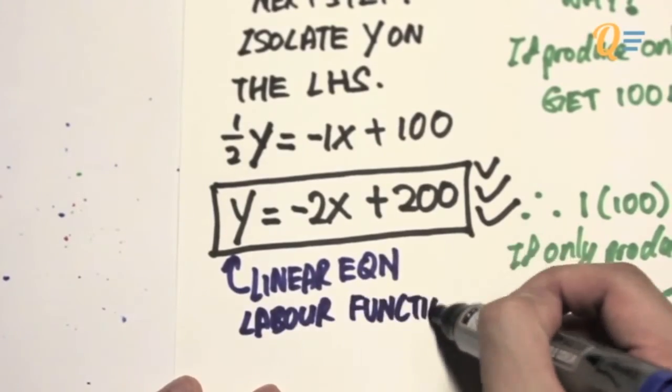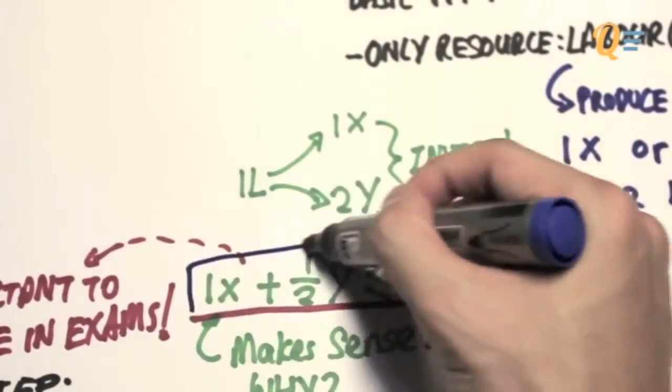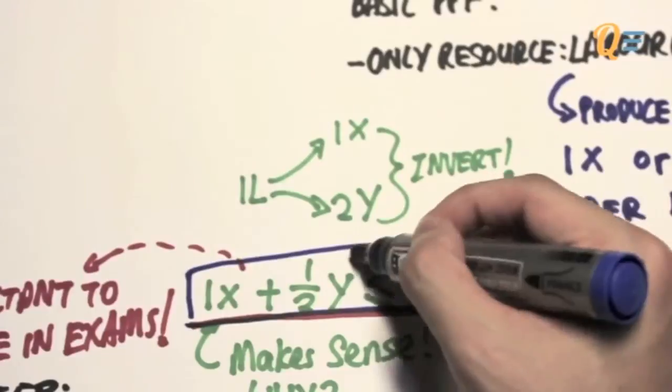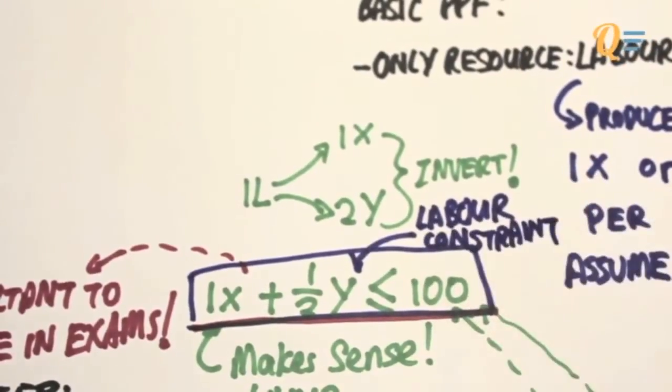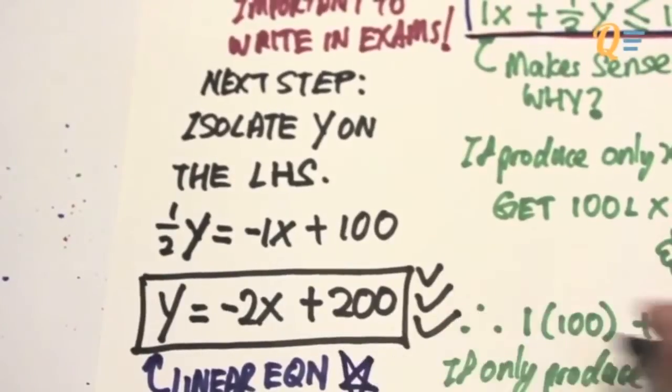We're going to call this a labor function over here, and we're going to call this the labor constraint. Now remember, write down the labor constraint, or any constraint for that matter.